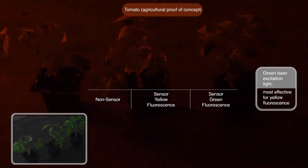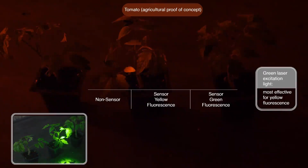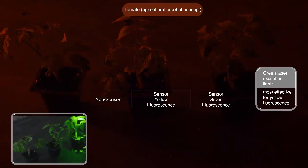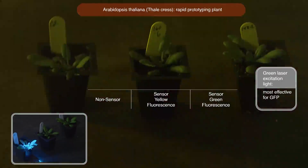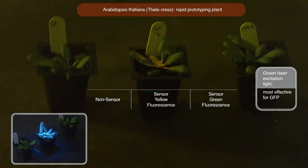As the laser and filter move to the first unmodified tomato, again no fluorescence is visible. Moving the laser to the second plant shows the same bright yellow fluorescence, while the green fluorescence in the third plant is not visible with this laser and filter.